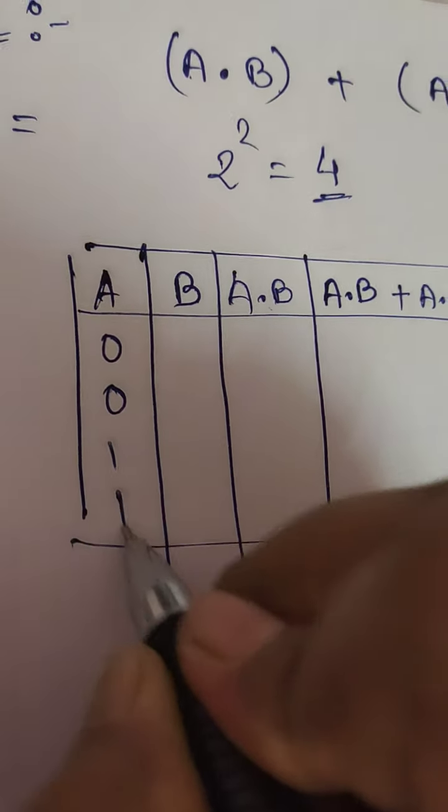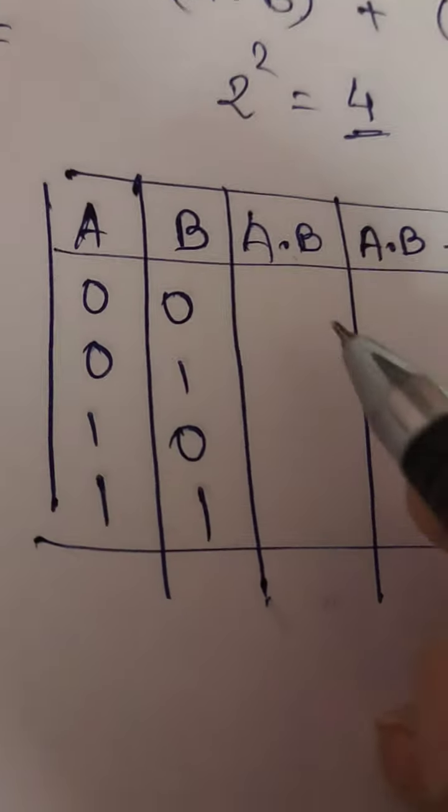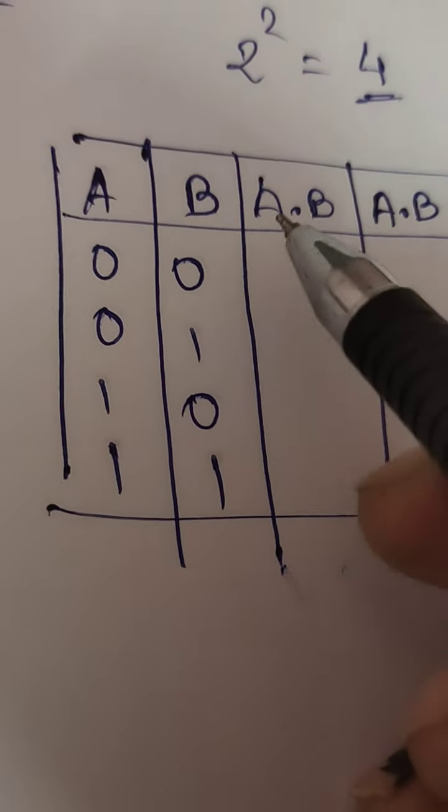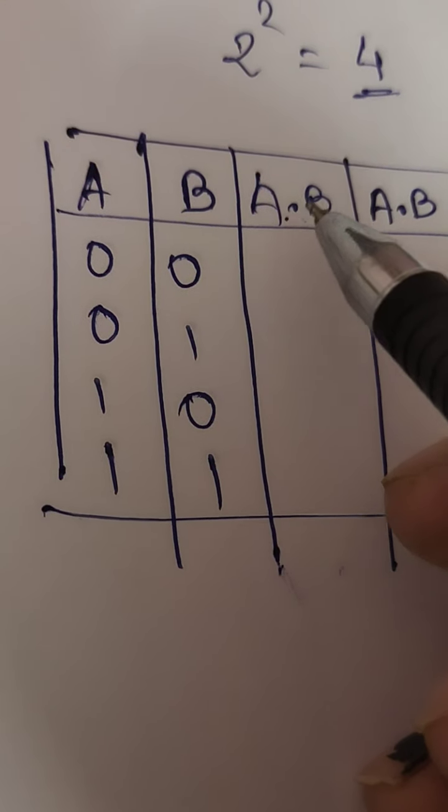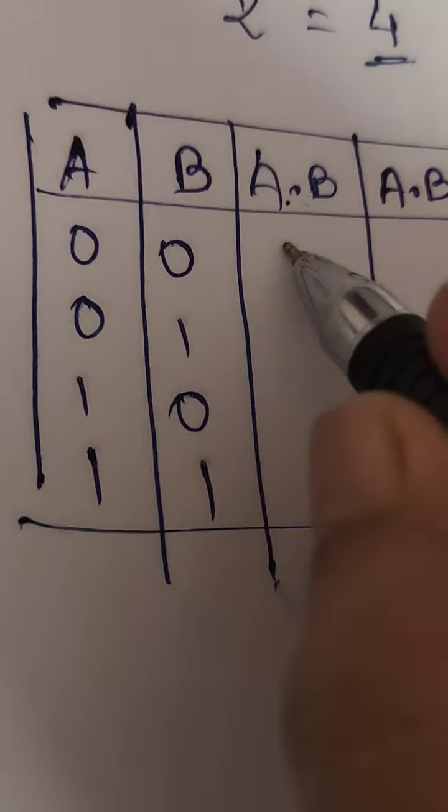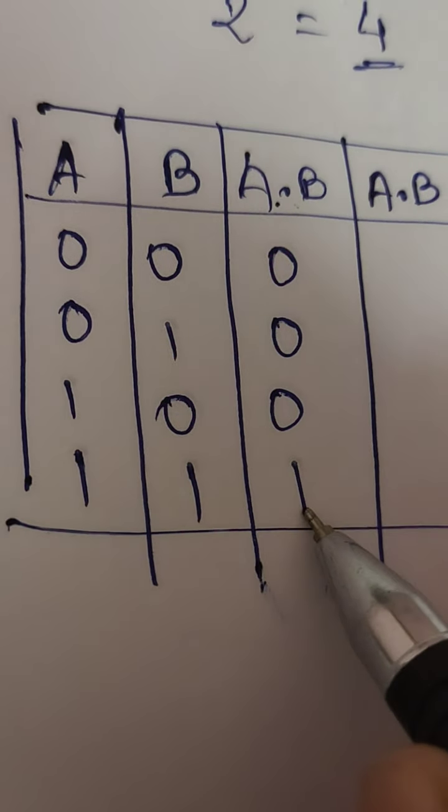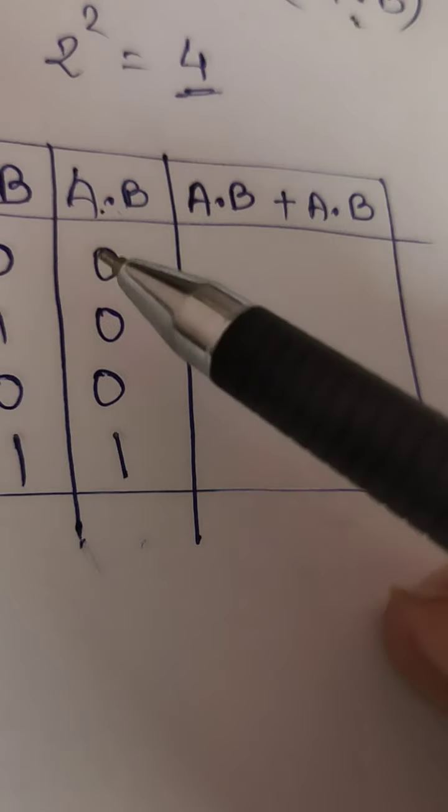Now look at the possible combinations. As I said, there will be 4 inputs, so the same process I write. Now look, A·B means dot, which is the AND operator. AND means if even one is false, my answer will be false. So according to that, this much becomes false but this one becomes one.